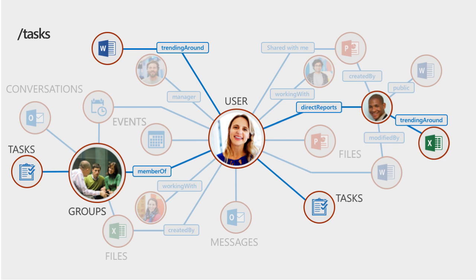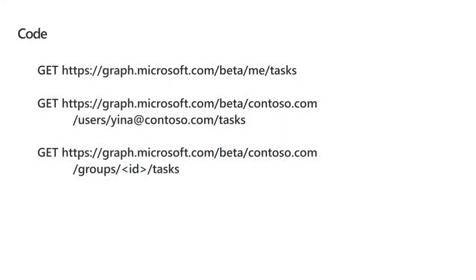In addition, you can work with tasks from Planner — tasks created by you or assigned to a specific group. The code for this is straightforward, just going to a specific endpoint. This is also an example of using the beta endpoint. The Graph has two endpoints: the v1 endpoint and the beta endpoint. The beta endpoint includes stuff that may change, but lets you play with things before they're actually shipped.